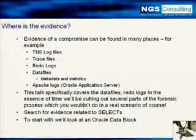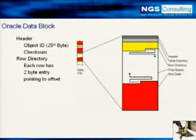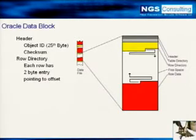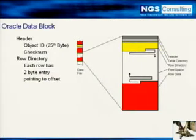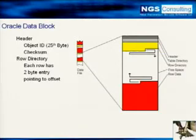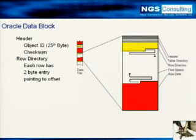First and foremost we're going to look at data files, specifically the metadata in there. We'll start with the Oracle data block. A database server needs to store data somewhere — that goes in the data files. The data files are split up into a variable chunk size; the default is 8,000 bytes on a Windows box. Each block of data has a specific format: the header is at the very top, below that is a table directory, then the row directory. Data itself grows from the bottom of the data block upwards toward the header, and the row directory grows downward toward the row data, with free space in between.